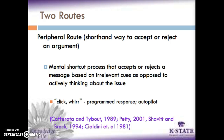The peripheral route to persuasion is determined by the reliance on simple clues and environmental characteristics of the message to make decisions and judgments. For example, in the peripheral route, people rely on clues such as source attractiveness, perceived credibility of the source, and message length. If either motivation or ability is not available to a person, there is a heavy reliance on peripheral clues as opposed to a message's factual information, which needs to be carefully analyzed.